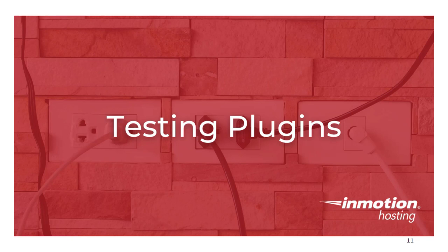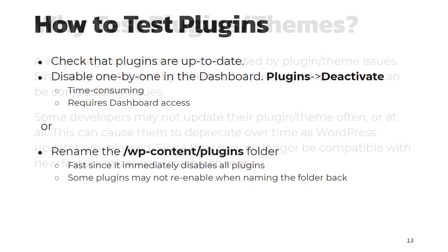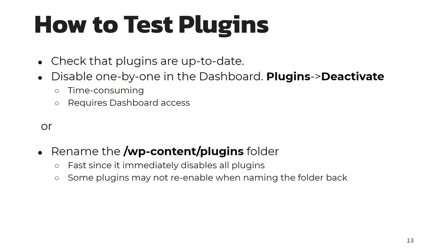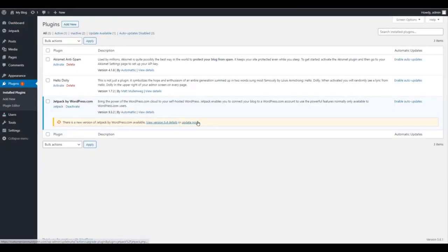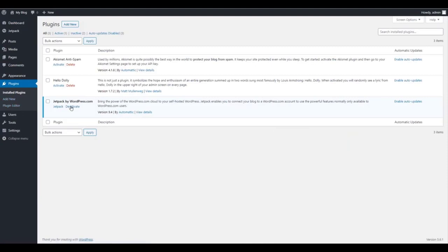A very common cause of problems is plugins. Maybe two similar plugins don't get along, or maybe one hasn't been updated in years and is not compatible with the latest WordPress update. A wide range of problems can be caused by plugin and theme issues since they're created by different third-party developers. There can be compatibility issues, and some developers may not update their plugin or theme often or at all, which can cause them to deprecate over time. The first thing I usually check is that the plugins are up to date.